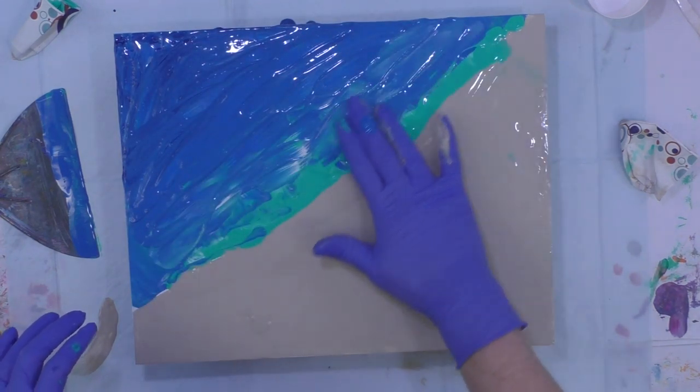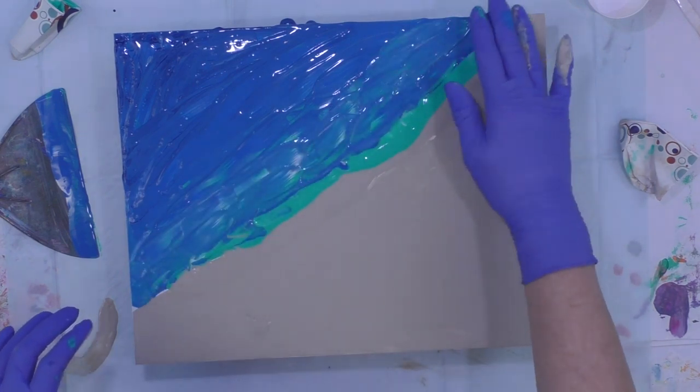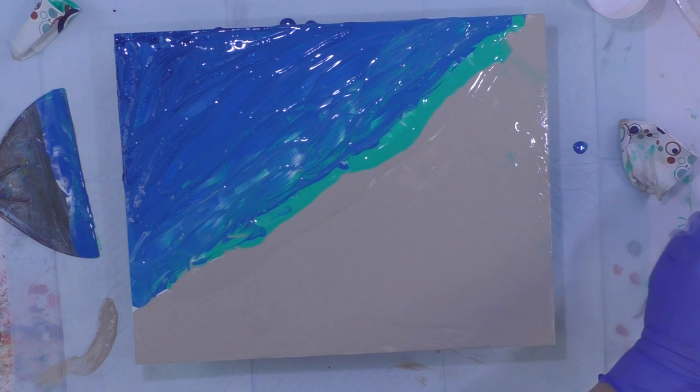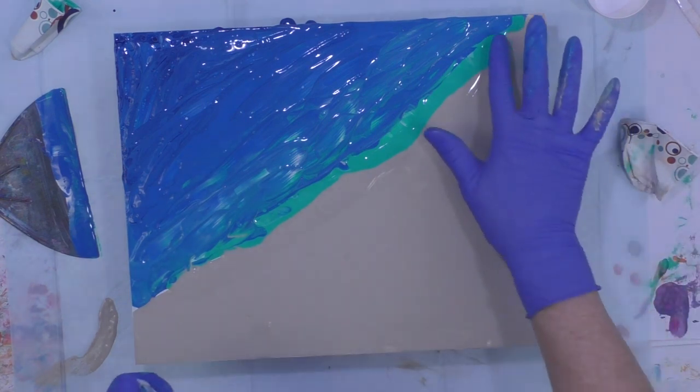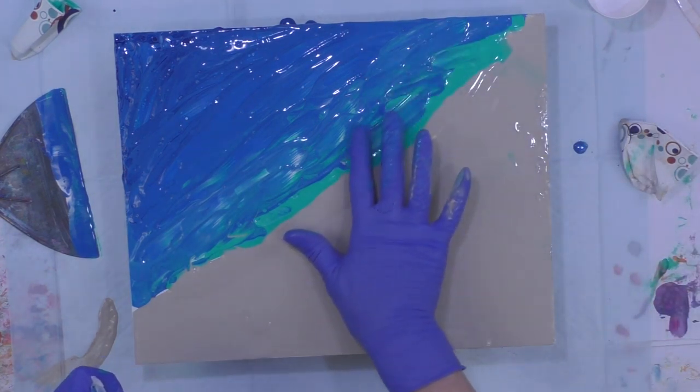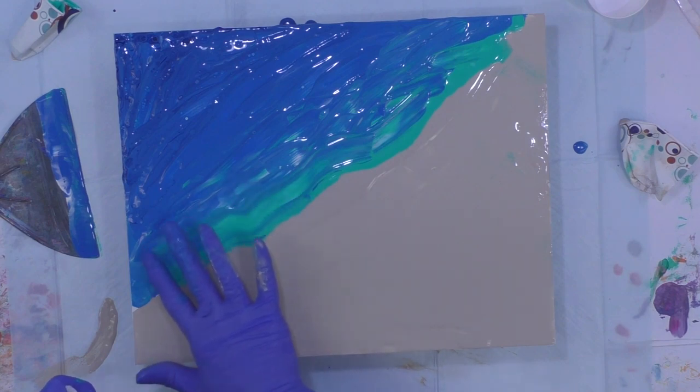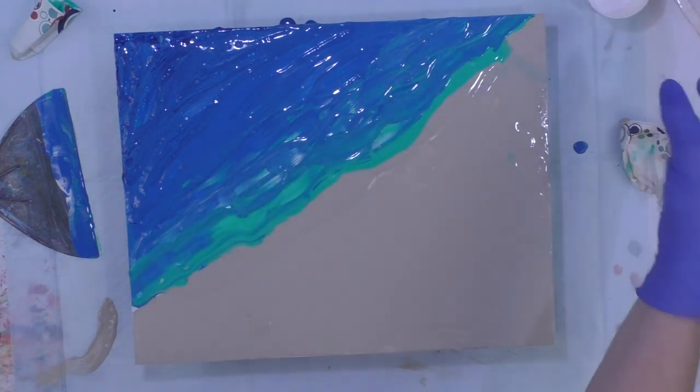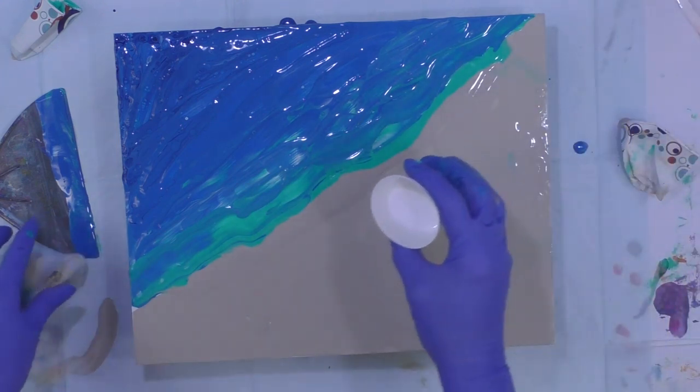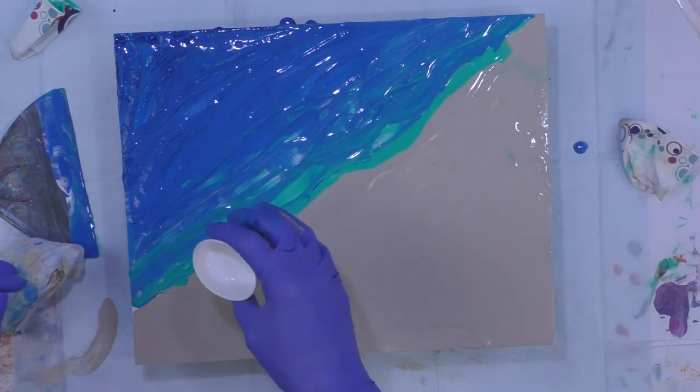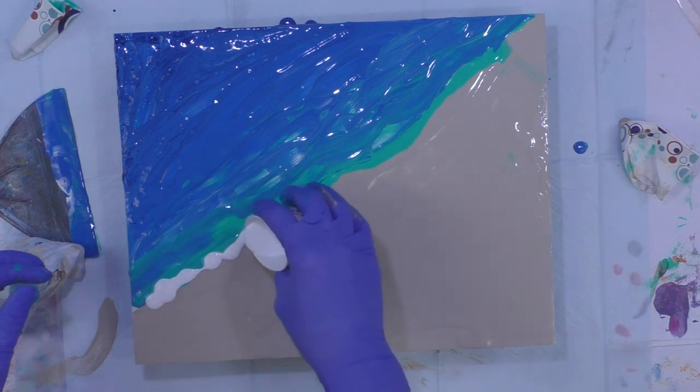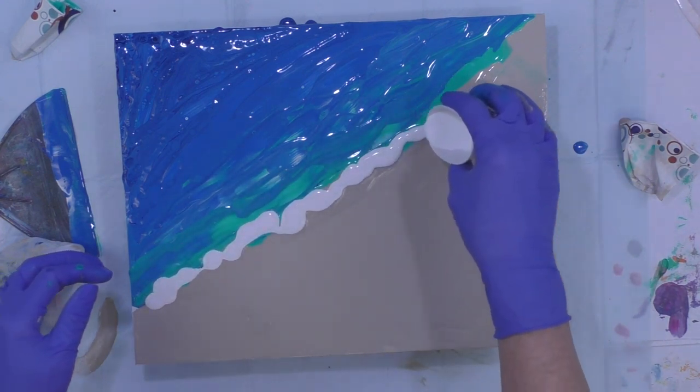So I'm just going to kind of work this around with my hands. But I really wanted the greeny blue to be closer to the shoreline. And then I want the white to kind of make a sea foamy kind of look to it. And I don't know if I can achieve this or not. So this is going to be experimental.